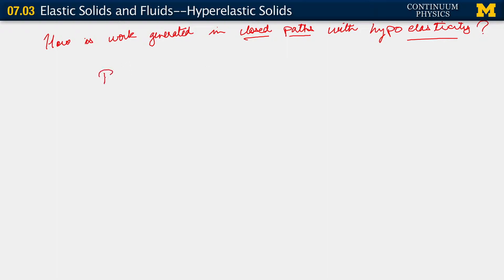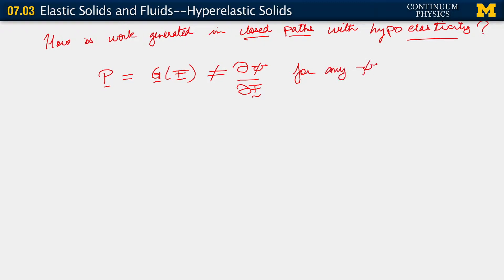What we're talking about is this: our first Piola-Kirchhoff stress tensor is indeed a function of the deformation gradient F, but no more. In particular, we do not have this last equality — meaning we don't have any such function psi which is a state function.